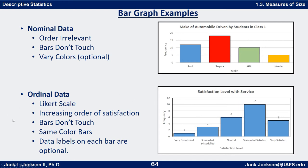The next example is ordinal data — a Likert scale in increasing order of satisfaction. The bars don't touch because they're discrete chunks. It goes from very dissatisfied, somewhat dissatisfied, neutral, somewhat satisfied, to very satisfied. This one has horizontal grid lines and optionally puts data labels above the bars, essentially recopying the table values. It's appropriate to use the same color bars since they're all measuring the same thing — just different levels of satisfaction.